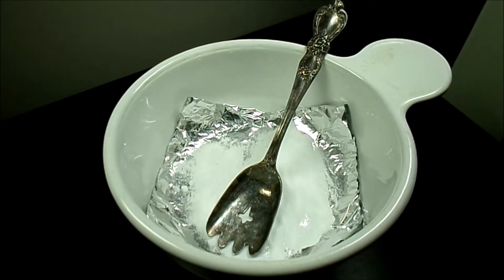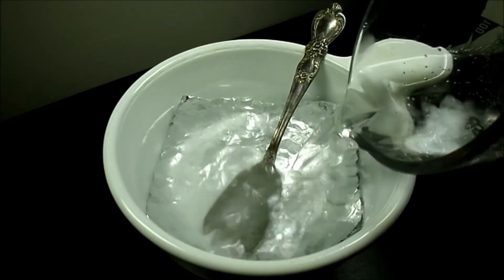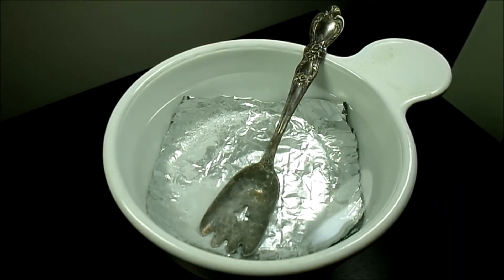Start with a non-metal bowl containing aluminum foil and baking soda. Place your tarnished silver so it is in direct contact with the aluminum foil and add hot water, making sure the silver you're cleaning is completely submerged.